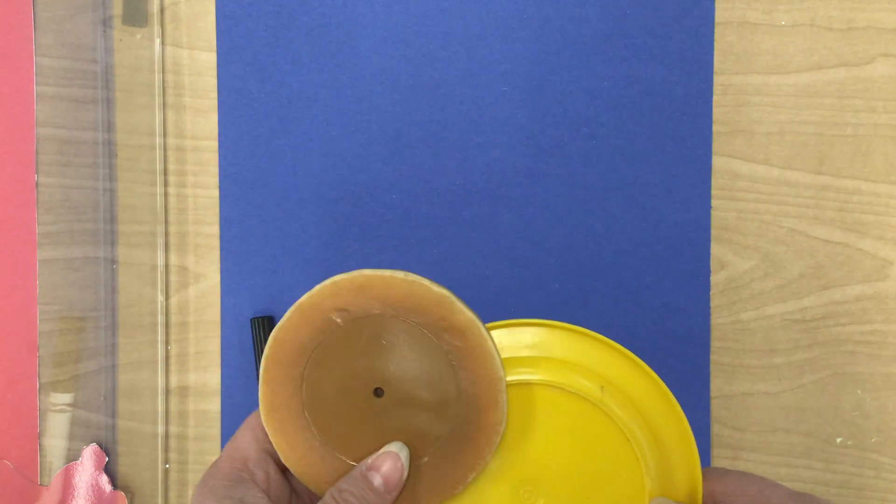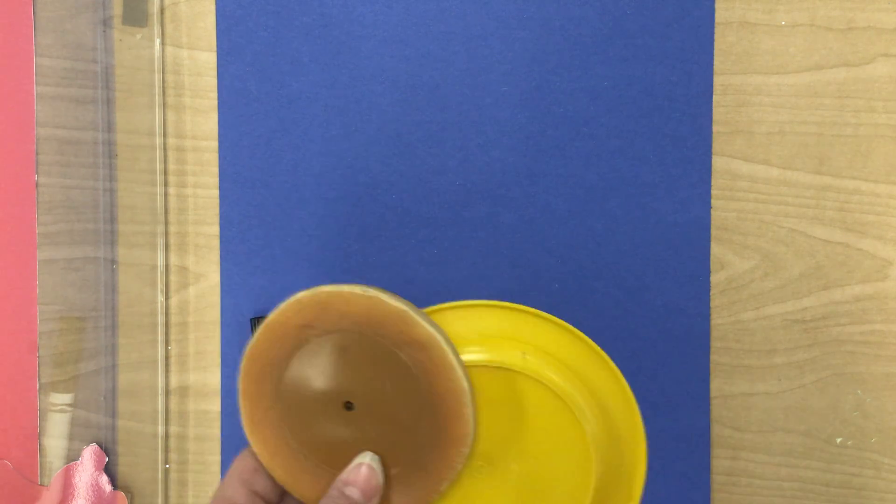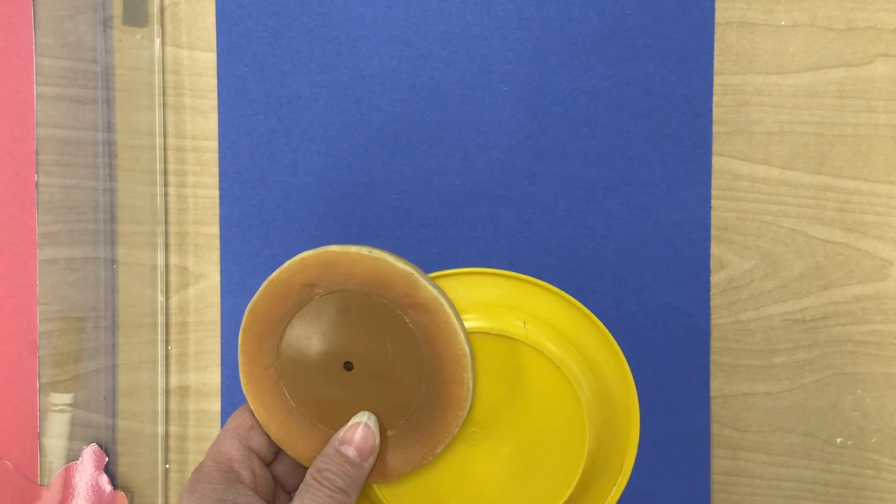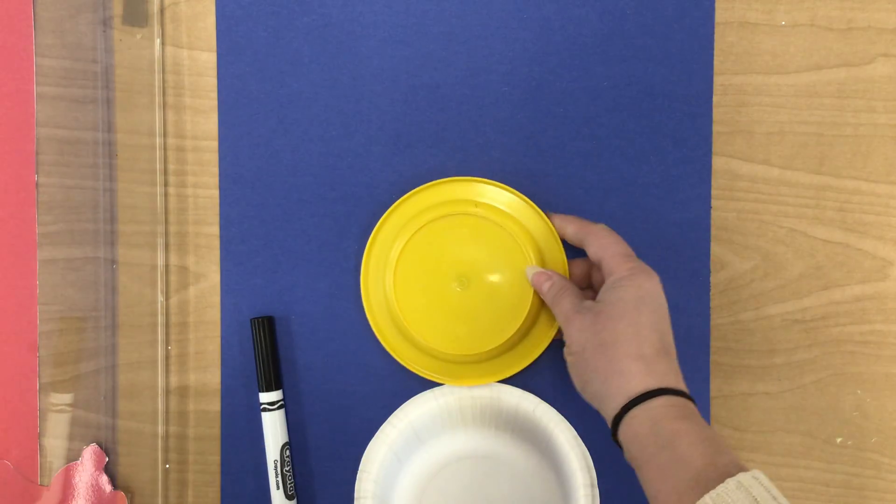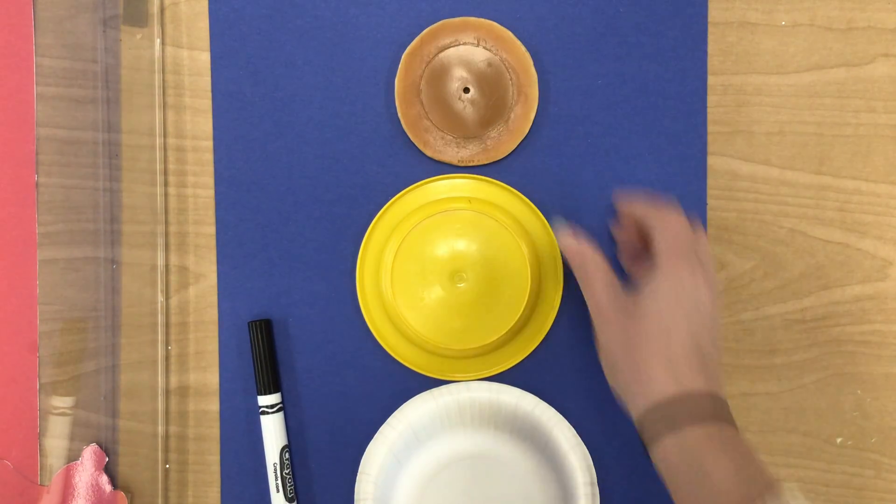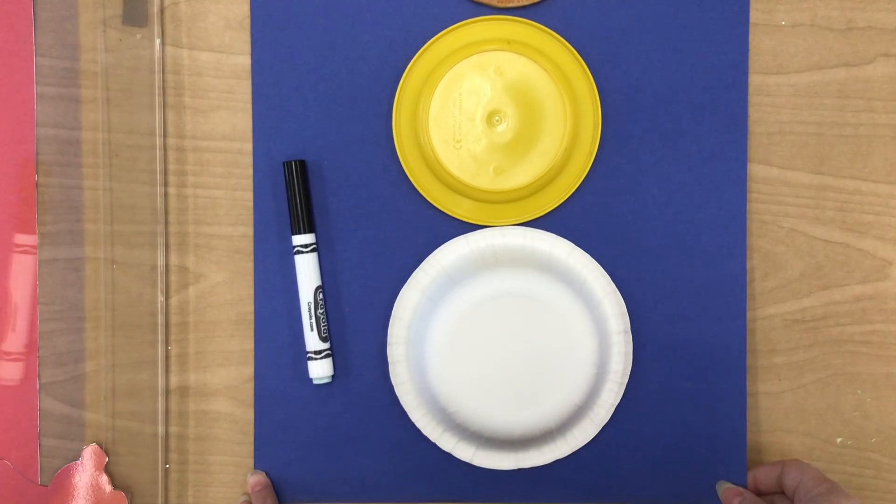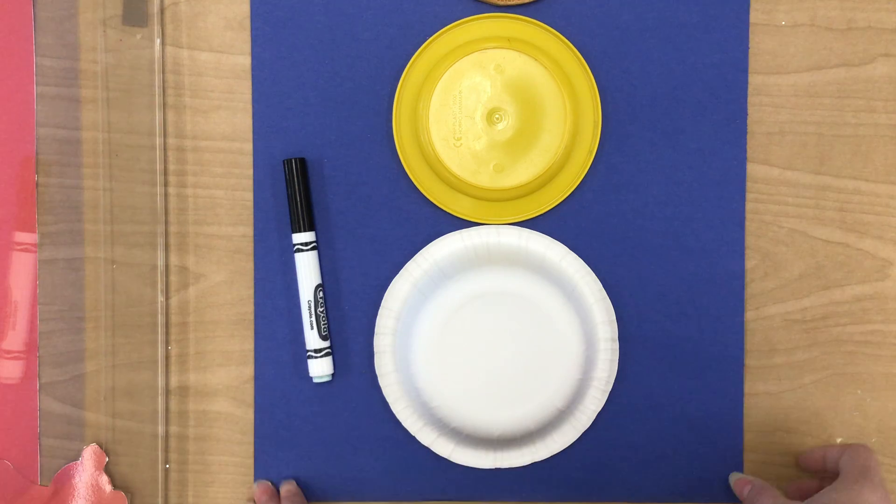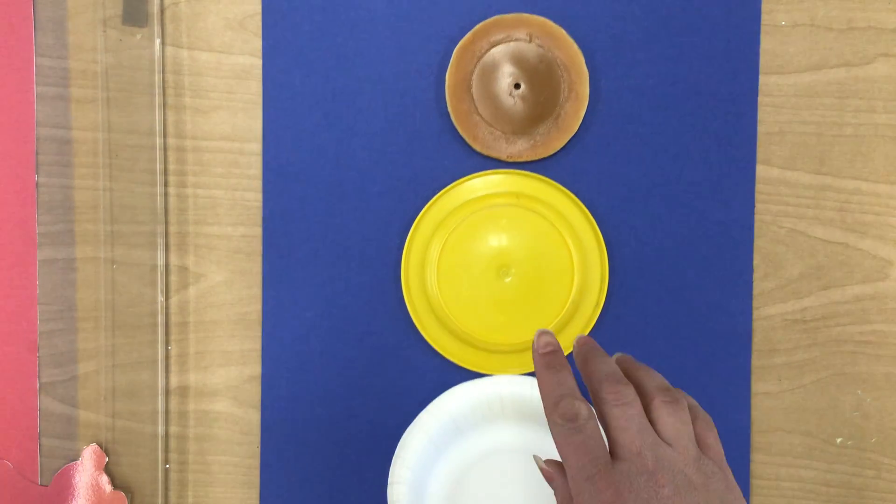And the other thing you need to know is your small, medium, and large, they have to lay next to each other on your paper in a way that it fits. So you have to make sure your paper is big enough for all three of your circles in the shape of a snowman.